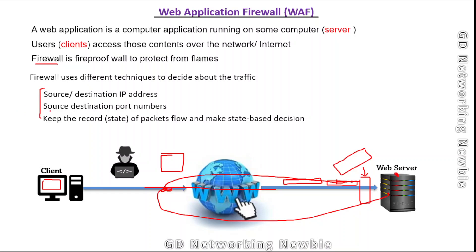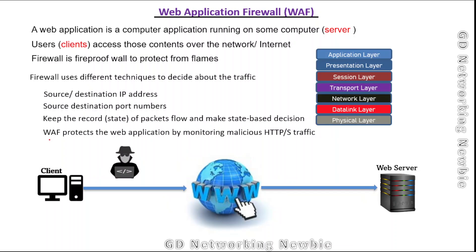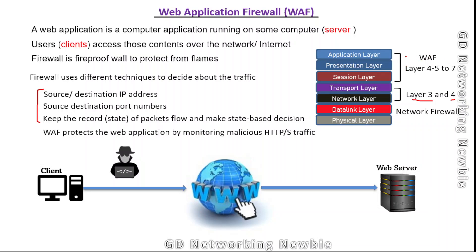Today we are discussing web application firewalls specifically. Web application firewalls are designed specifically to protect web applications, and this is done by monitoring malicious HTTP or HTTPS traffic. Regular firewalls mostly work at Layer 3 and Layer 4 — the network and transport layers — whereas web application firewalls generally operate at Layers 4 through 7, up to the application layer. Their prime job is to secure our web applications.